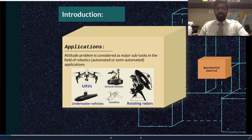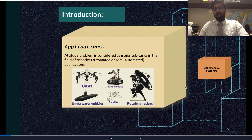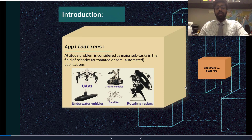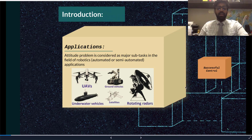The attitude problem is considered a major sub-task in the field of robotics, and is heavily seen in automated and semi-automated applications, such as unmanned aerial vehicles or UAVs, along with ground vehicles, underwater vehicles, satellites, rotating radars, and many other such applications.